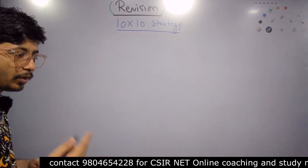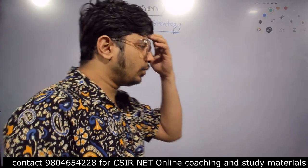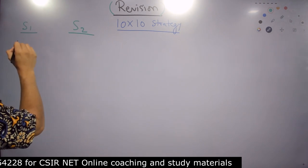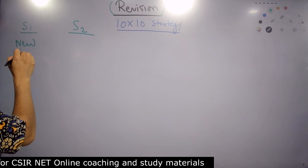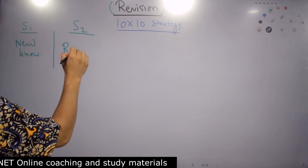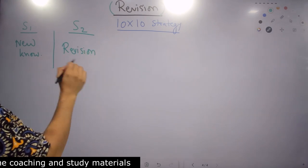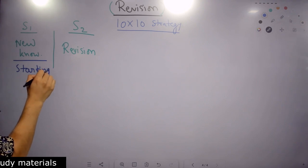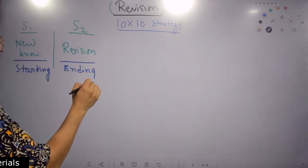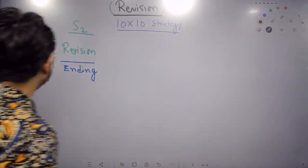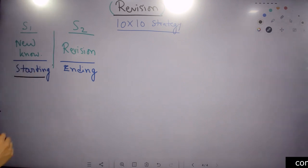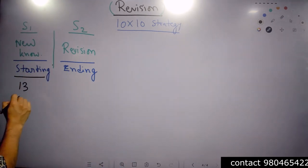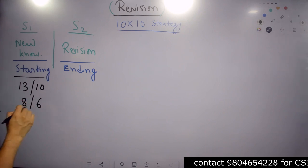Before talking about the strategy, I must tell you how we developed this strategy. Revision - we are talking about revision, not reading new things and getting new concepts. To understand this, there are two segments to your preparation. Segment number one is new knowledge, and segment number two is revision. These are two separate segments. The new knowledge segment is the starting of your preparation, and revision is the ending of your preparation.